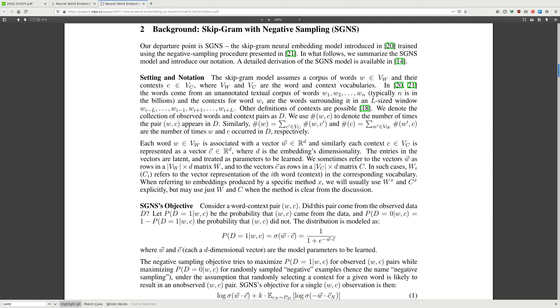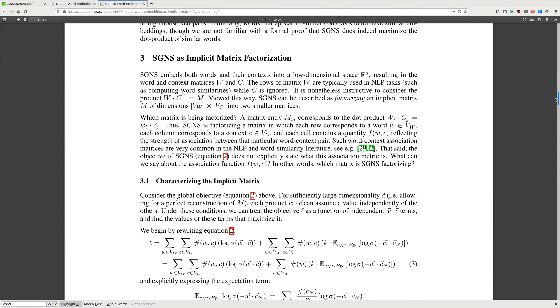SGNS as implicit matrix factorization. SGNS embeds both words and their context into low-dimensional space, resulting in word and context matrices. The rows of the matrix are typically used in NLP tasks, such as computing word similarities, where C is ignored. It is nonetheless instructive to consider the product with W times C transpose. Viewed this way, SGNS can be described as factorizing an implicit matrix M of dimensions into smaller matrices.